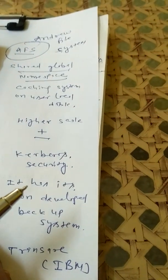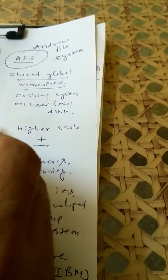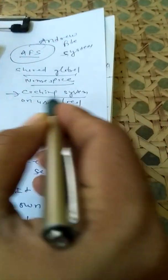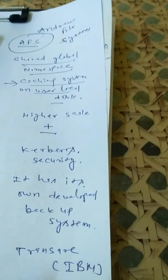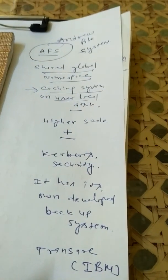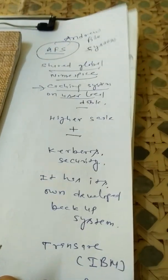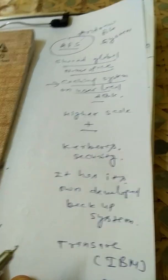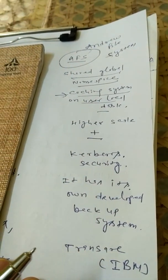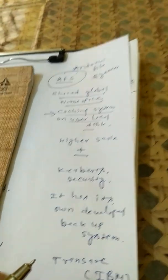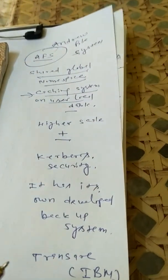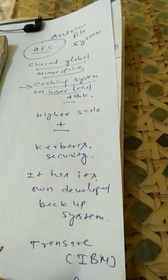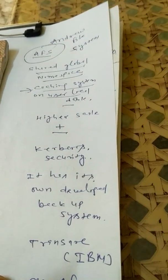Another thing is file caching — the caching system on the user local level disk is used. The caching file system is used in the Andrew file system, and it is basically based on the user local disk.